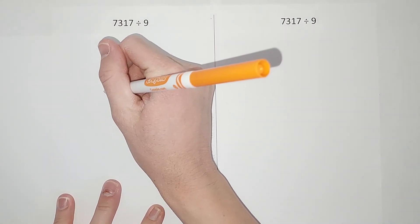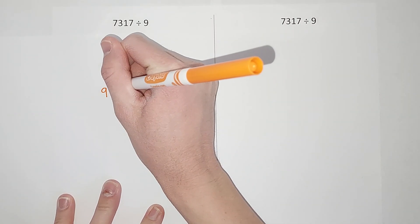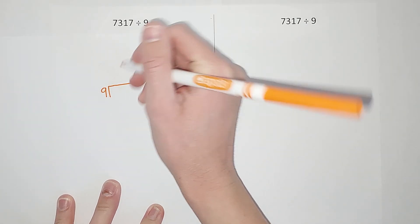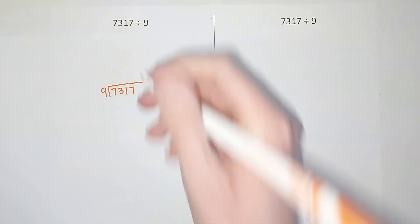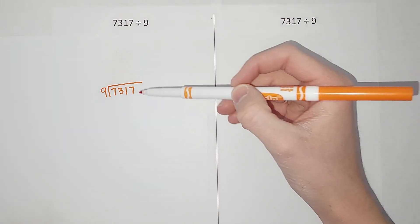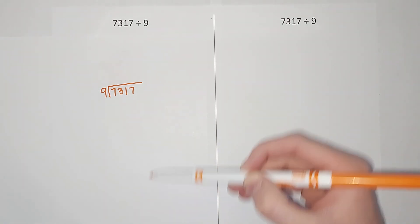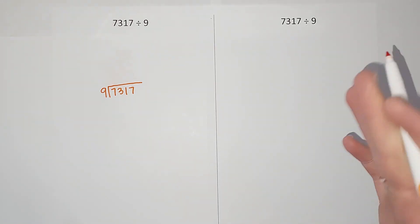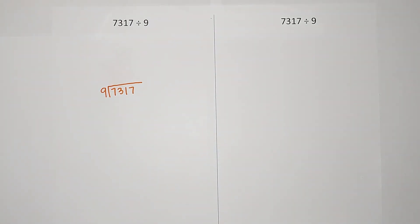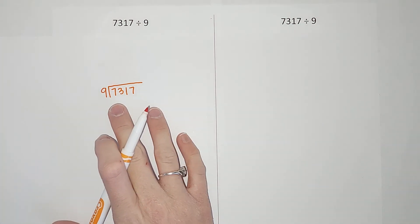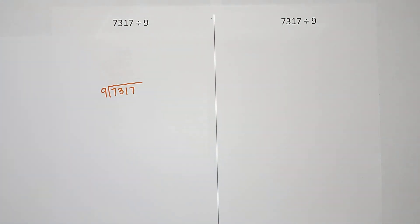Okay, so first of all we are going to start and it's gonna look like long division at first, because it's really what we're doing, just in a different way. So we're dividing 9 into 7317. Now you might see some ways have you draw a long line here and write the numbers over here. That's great. I personally like to write them on top, but you can do them either way.